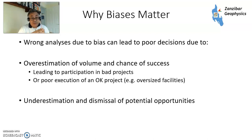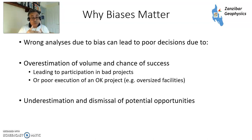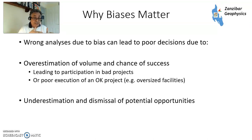But it can also lead to underestimation and dismissal of potential opportunities. An example of that: in the Eastern Mediterranean, in Egypt, there's the Zohr discovery, which was made in 2015. This was made by ENI, one of the Italian oil companies and one of the best explorers of the last decade. They were touting for partners for a long time because they didn't want to drill this at 100% equity taking all the risk. Nobody said yes. So they drilled it at 100% anyway — what have we got to lose? — and it came up with the biggest gas discovery in the last 10 years. So biases can lead you to underestimate potential opportunities and pass on things.